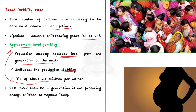A total fertility rate lower than 2.1 children per woman indicates that a generation is not producing enough children to replace itself, which will eventually lead to an outright reduction in population.